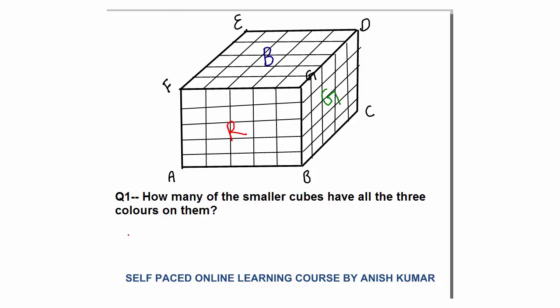Question number 1: How many of the smaller cubes have all 3 colors on them? All 3 colors means exactly 3 surfaces painted. Now what is the location of exactly 3 surface painted? Corner cubes are the cubes which have exactly 3 painted surfaces. So we look at corner cubes.